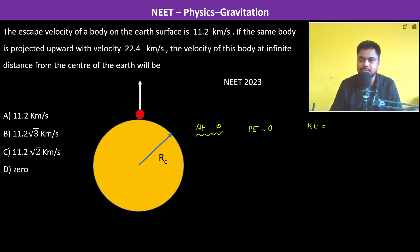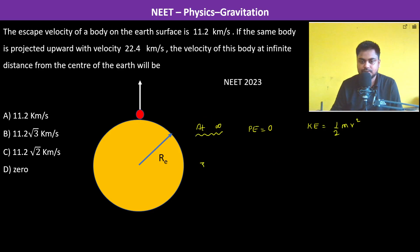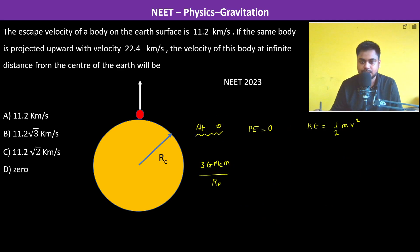3GMₑm/Rₑ = ½mv². This is the total energy at the surface of the Earth, and this is the total energy at infinity. So therefore, m cancels, so v